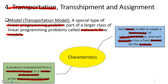Previously we looked at the assignment model, and the assignment model is a type of transportation model. The difference is that in the assignment model, each source is able to supply just one unit and each destination is able to receive just one unit. But in a transportation model, a source can supply any fixed number of units and the destination could receive any fixed number of units as well.